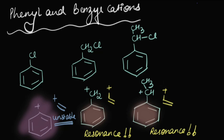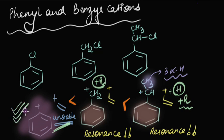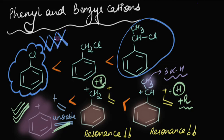What extra factor is there? The third carbocation has three alpha hydrogens as well, so there's a possibility of hyperconjugation. The third one is therefore stabilized via both hyperconjugation and resonance, while the second one is stabilized via resonance only, and the first one is highly unstable. The phenyl substrate would not react via SN1 at all, while the substrate with three alpha hydrogens — stabilized by both resonance and hyperconjugation — reacts the fastest via SN1.